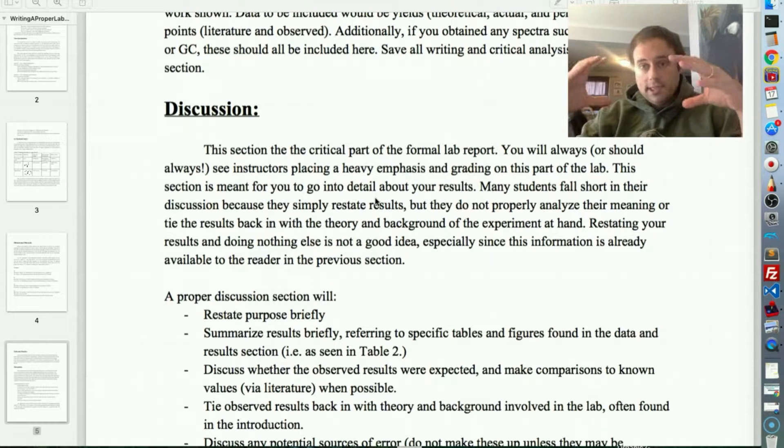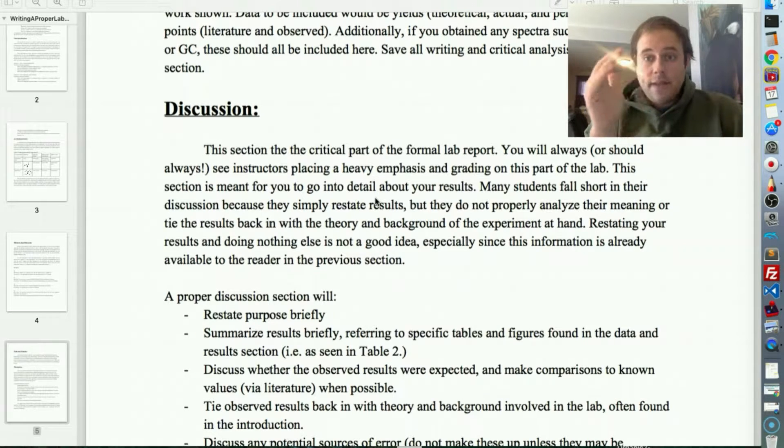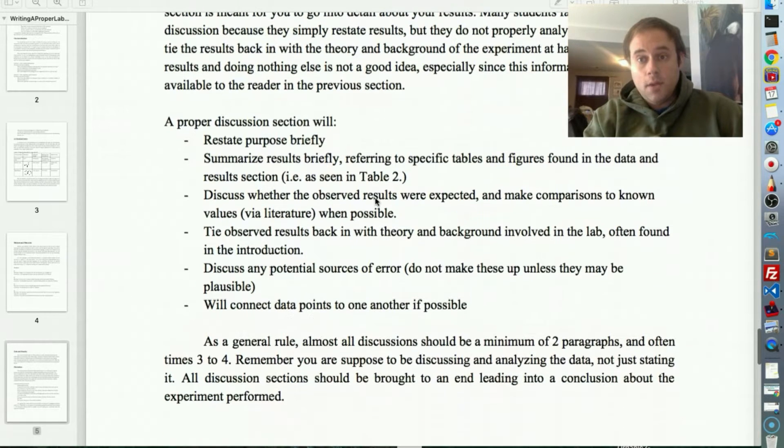So, to turn around and in the results section and the data section, to give me a table with the observed melting points, the literature melting points, the theoretical yields, the actual yields, and then for me to come down, I gather that information. I gleam over the tables. For me to come down to the discussion and for you to say the observed melting point of benzoic acid was 122 degrees Celsius. This matches with the literature point. Therefore, benzoic acid was pure. And that's all you say? You need to be discussing that to a greater extent because I could have gathered that from maybe not the purity part if I'm a real novice, but I could at least gather the fact that the benzoic acid melted at 122 and that's what the literature value said it should have melted at.